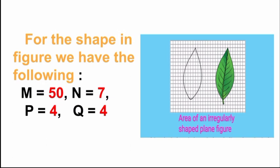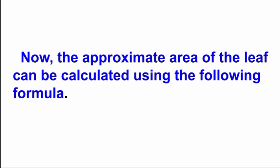For example, the graph shows a leaf — the leaf is the irregular object. For the given leaf: M (full squares) = 50, N (more than half) = 7, P (half) = 4, Q (less than half) = 4 squares. The approximate area of the leaf can be calculated using the following formula.